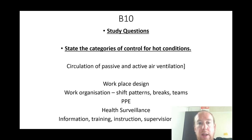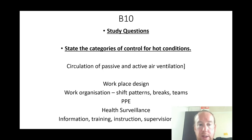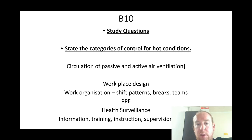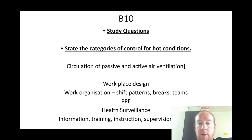State the categories of controls for hot conditions: circulation of passive and active air ventilation, workplace design, work organization, shift patterns, breaks, teams, PPE, health surveillance, information, training, instruction, supervision, signage, and provision of drinking water and shade.